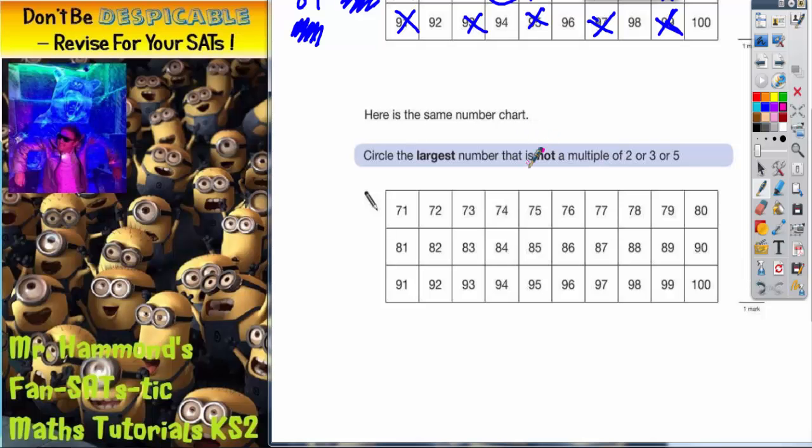Circle the largest number that is not a multiple of 2, 3, or 5. So we can't have multiples of 2. So let's cross out the multiples of 2. All these numbers. So anything that's even is a multiple of 2, and we can't have it because it says not multiples of 2.